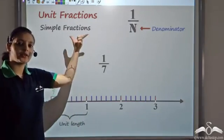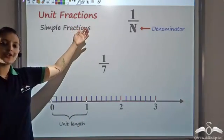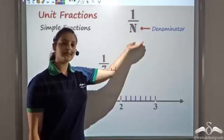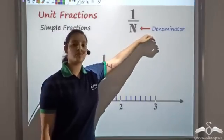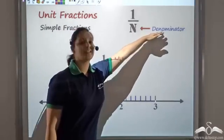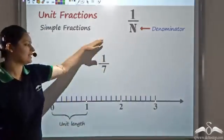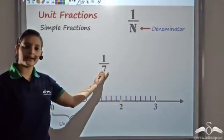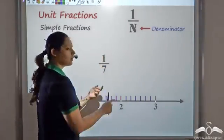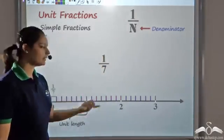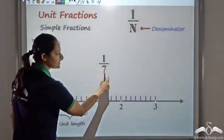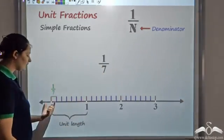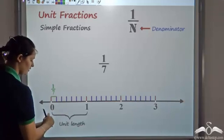We had seen that unit fractions could be written as one over any natural number, and this natural number was called the denominator. So let's say we have one by seven — seven here is the denominator. And what does it show on a number line? This denominator seven tells me that the unit length has to be divided into seven equal parts.